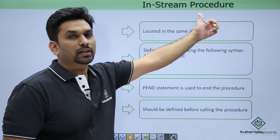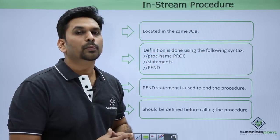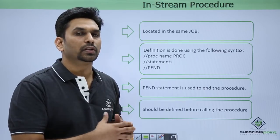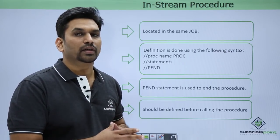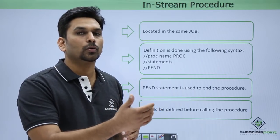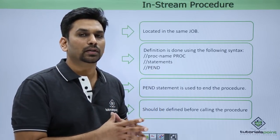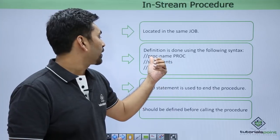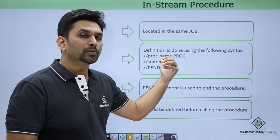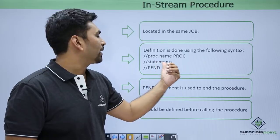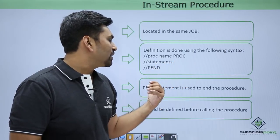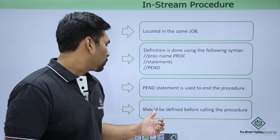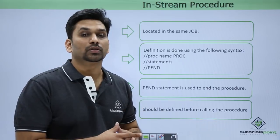In-stream procedures are located in the same job. We first declare them and then use them. The key point is you must define the procedure before calling it — if you call a procedure that is not defined before that step, it will throw an error saying procedure not found. The syntax is: write the procedure name, then the keyword PROC, then write any statements, and then PEND. The PEND statement is used to mark the end of the procedure.